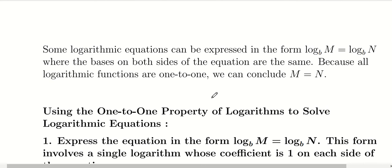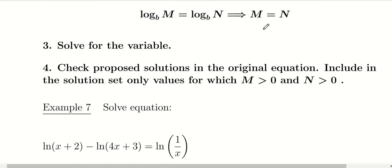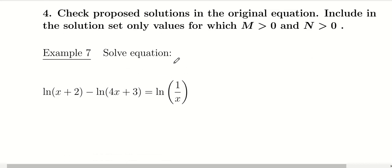Another common technique for solving logarithmic equations — especially when there are logarithms on both sides — is to invoke the one-to-one property of logarithms. If both sides can be written as a single log of the same base, then log base b of m equals log base b of n implies that m equals n. This property applies whenever you have logs on both sides of the equation.